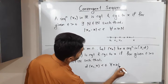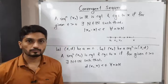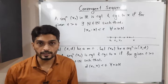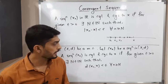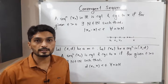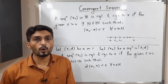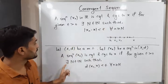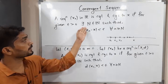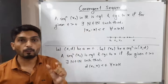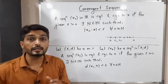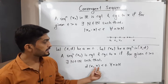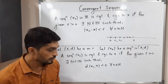For all n greater than or equal to capital N. You can easily compare this with the definition of convergent sequence in ℝ — there is a very small difference. For given epsilon greater than zero, we write the same thing; there exists N belonging to the natural numbers. Here we take mod, and here we take d which is a metric in the metric space (X, d). The distance between xₙ and x is less than epsilon.